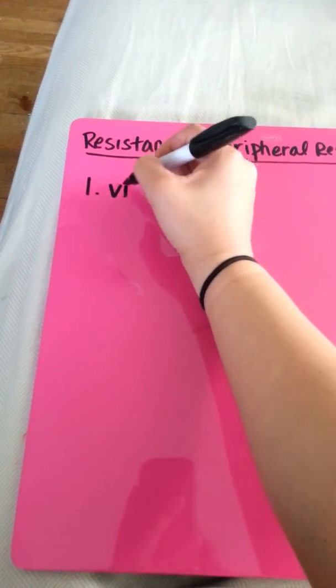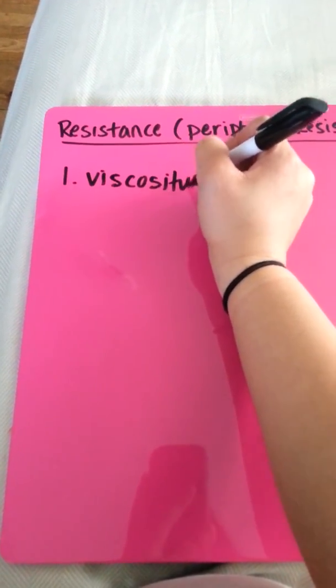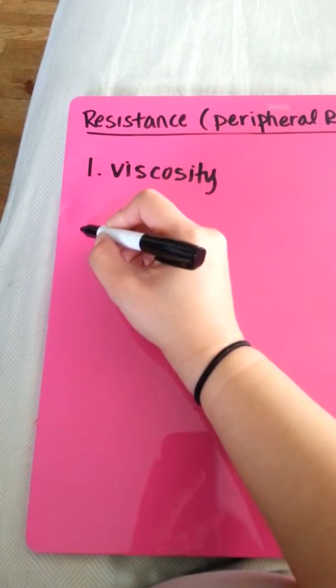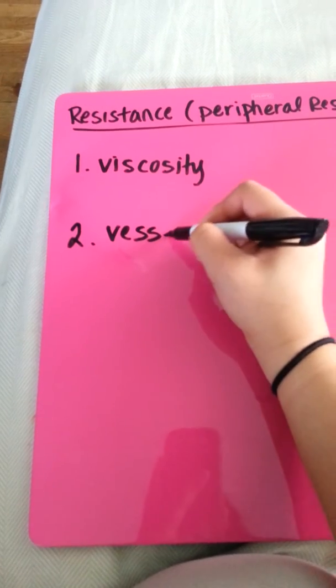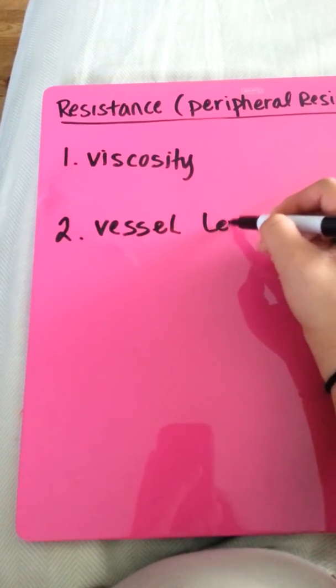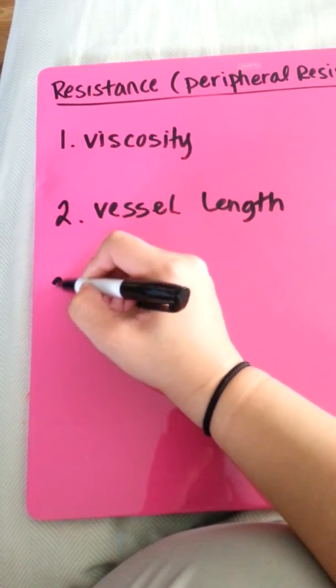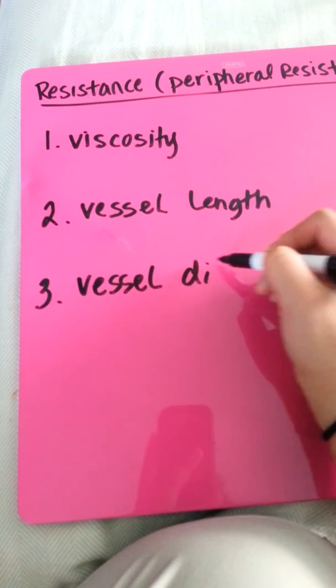Viscosity or thickness. Two is the vessel length. Three is the vessel diameter.